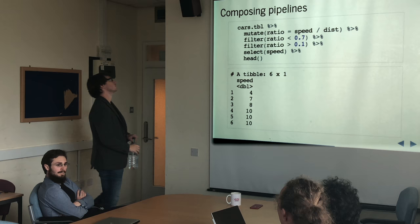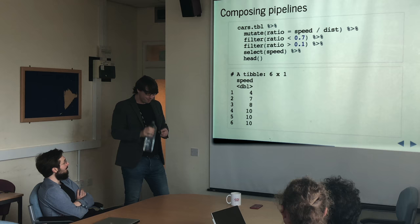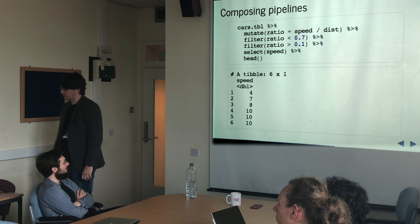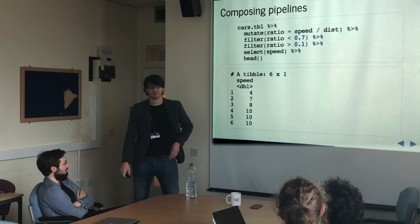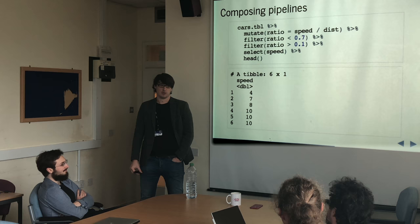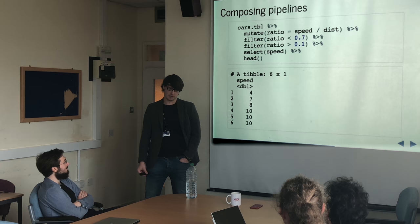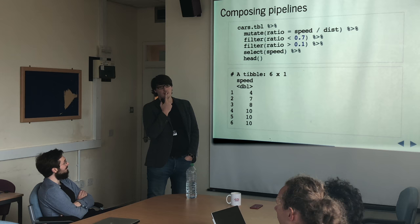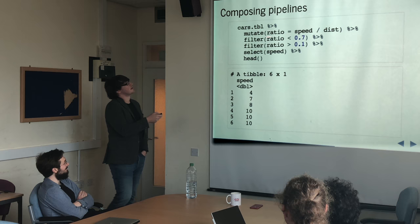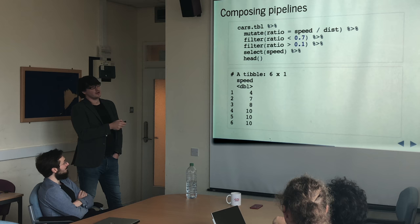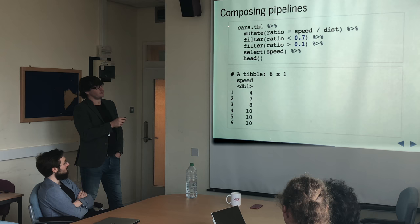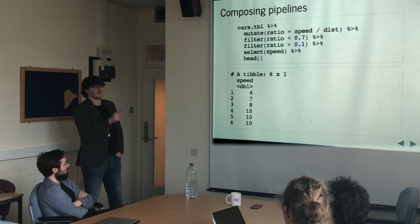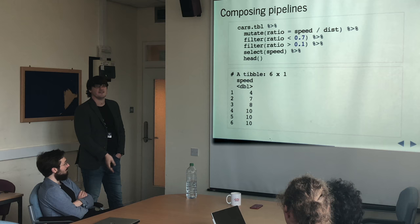Would this be executed one at a time or would it construct the pipeline first and then execute? It constructs the pipeline first. The pipeline essentially means pass the output as the first argument, unless you specify somewhere else to go. Can you save the pipeline somewhere? You can assign it to a function and call it. Or if you want to break it up, you wouldn't use the pipe — you'd save an intermediate result to a variable and pass that variable into the second step. The idea is it avoids saving to different variables each time, because that takes up memory if you don't need those intermediary data frames.